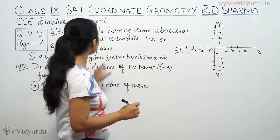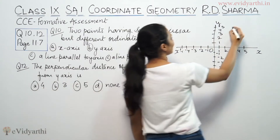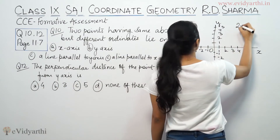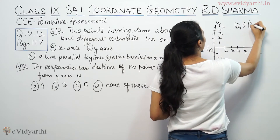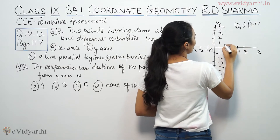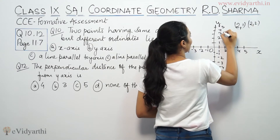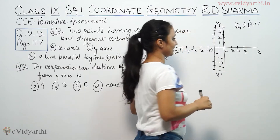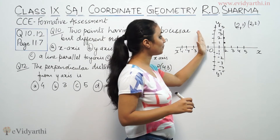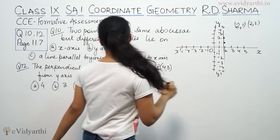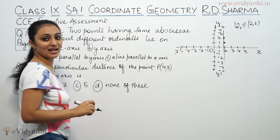The question says two points having the same x-coordinate but different y-coordinates. Suppose the points are (2, 1) and (2, 2) — both have x-coordinate 2 but different y-coordinates. Plotting these two points and drawing the line through them, the line is parallel to the y-axis. So the answer is: a line parallel to y-axis.